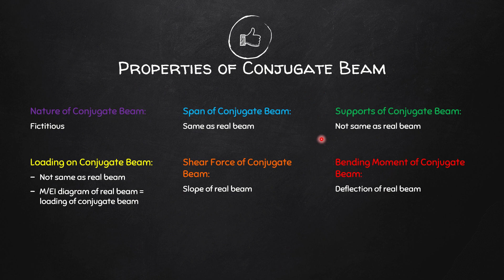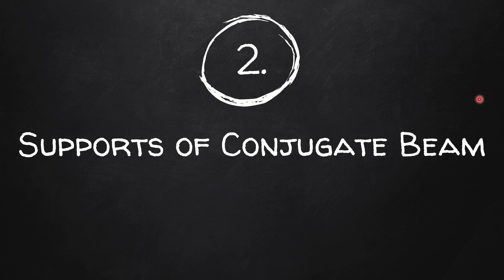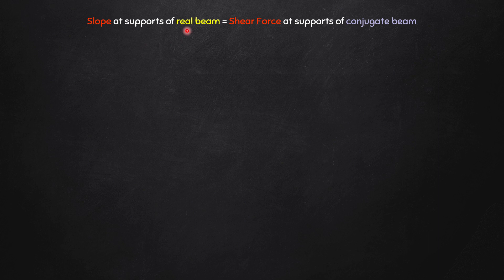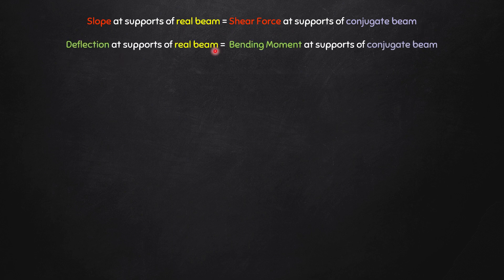Let us discuss the supports of the conjugate beam. The slope of the real beam corresponds to the shear force in the conjugate beam. Therefore, the slope at the supports of the real beam should equal the shear force at the support of the conjugate beam. Similarly, the deflection of the real beam corresponds to the bending moment of the conjugate beam, so the deflection at supports of the real beam equals the bending moment at the support of the conjugate beam. These two fundamentals determine what kind of support in the conjugate beam corresponds to each real beam support.